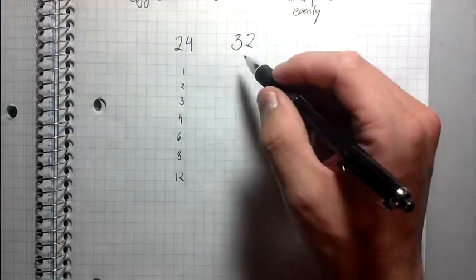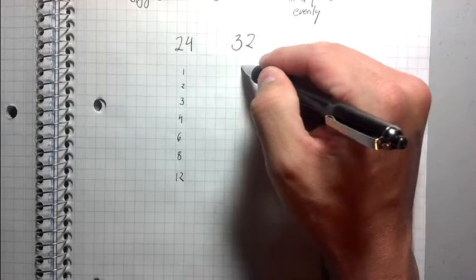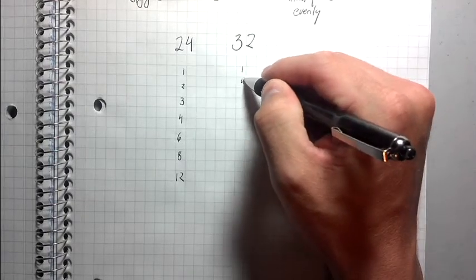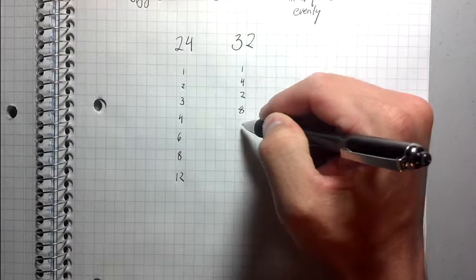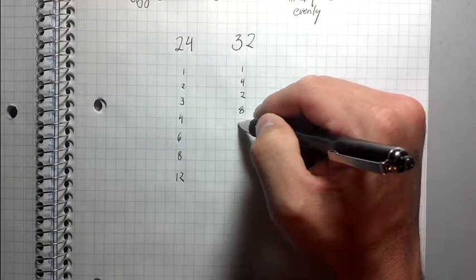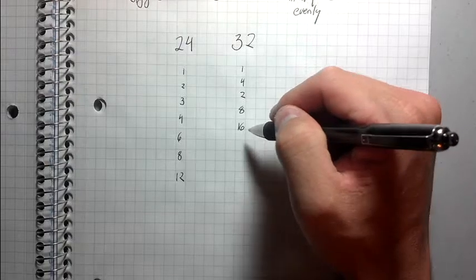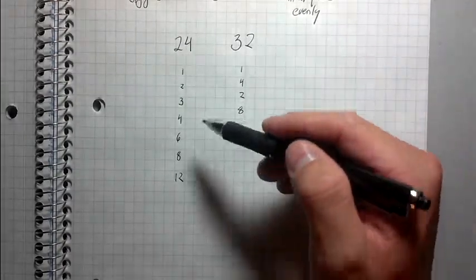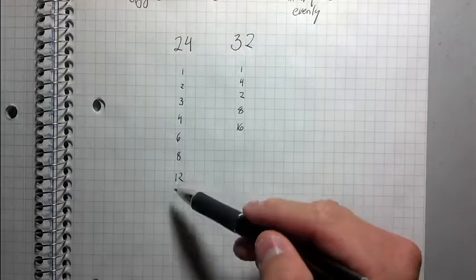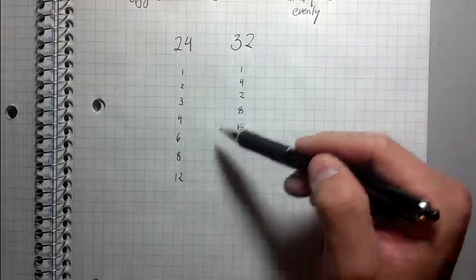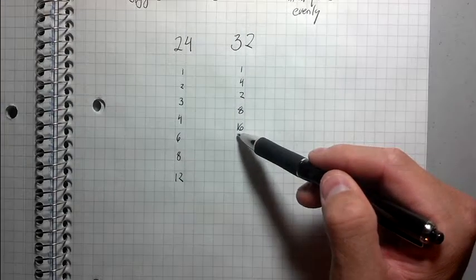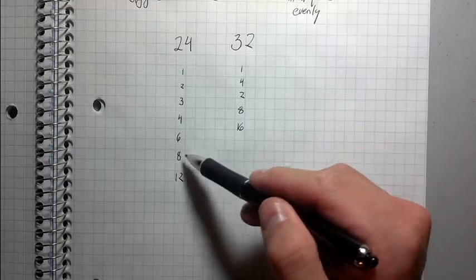So it is 32. What are the numbers that go into 32? 1, 4, 2, 8, 16. I think that's it. So anyways, what I want to look for now is the largest number in both of these lists that is shared between them.